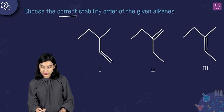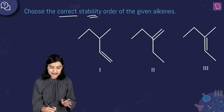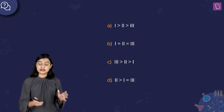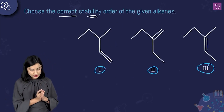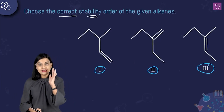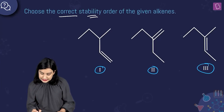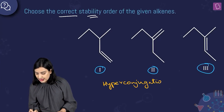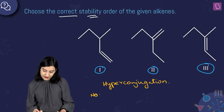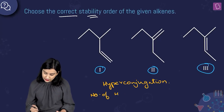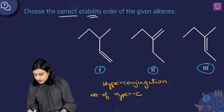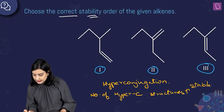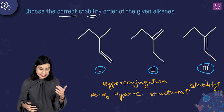Here they're asking us to choose the correct order of stability of the given alkenes — structures one, two, and three. The moment you see alkenes and need to talk about their stability, remember that stability of alkenes depends on the hyperconjugation effect. As the number of hyperconjugating structures increases, the stability increases.